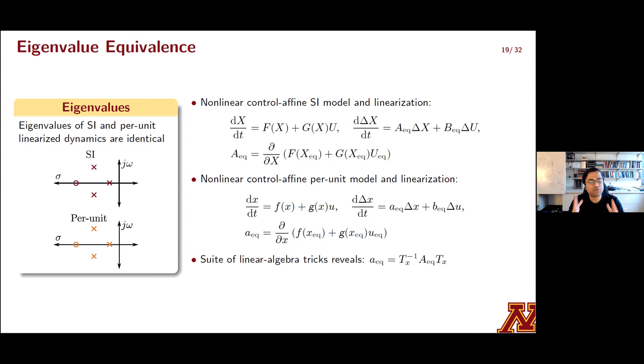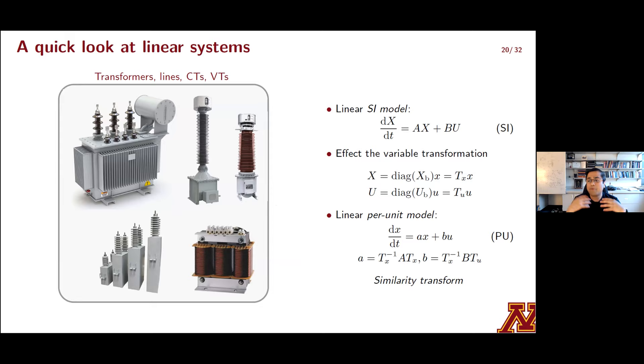So this takes us well into linear systems. You can repeat the same process for linear systems. Models for power transformers, potential and current transformers, RLC banks. These are all linear if you disregard saturation and hysteresis effects. And the SI model state equation in this case is given by the one that's tagged SI. You can apply the same procedure to get the per unit model tagged PU. And in this case, it's readily evident that the small A and the capital A matrices are related directly through a similarity transform. So all inferences and properties that we established for the nonlinear setting carry over to the linear case as well.